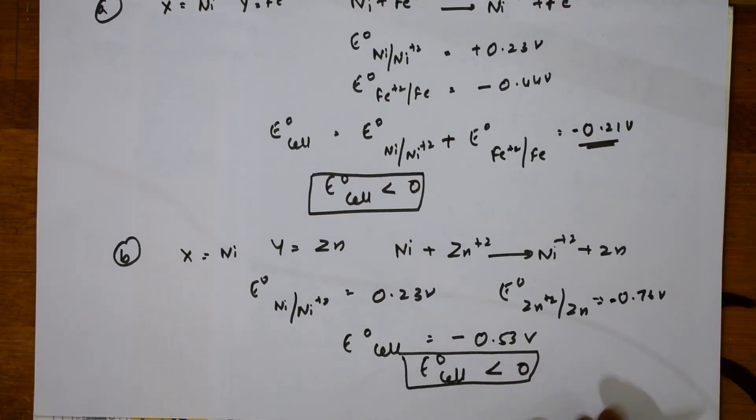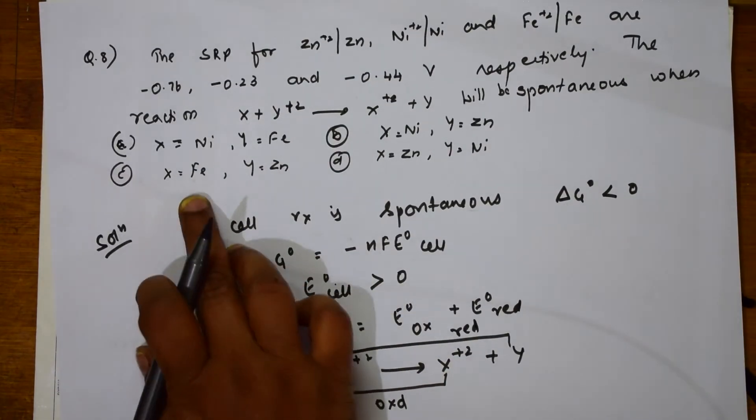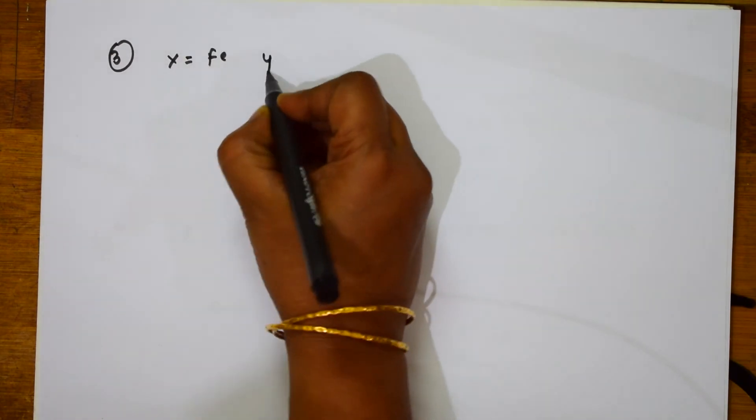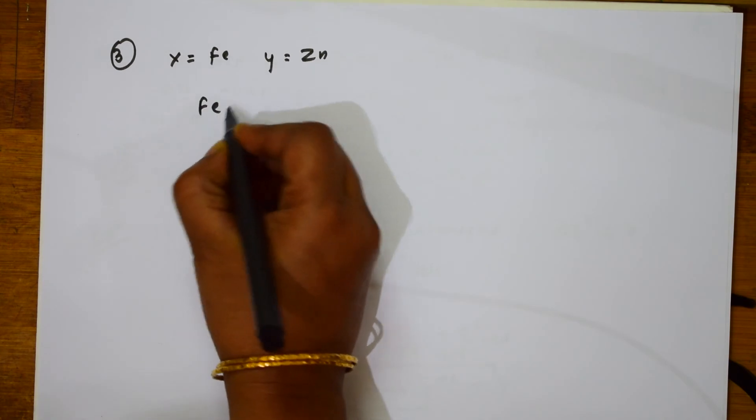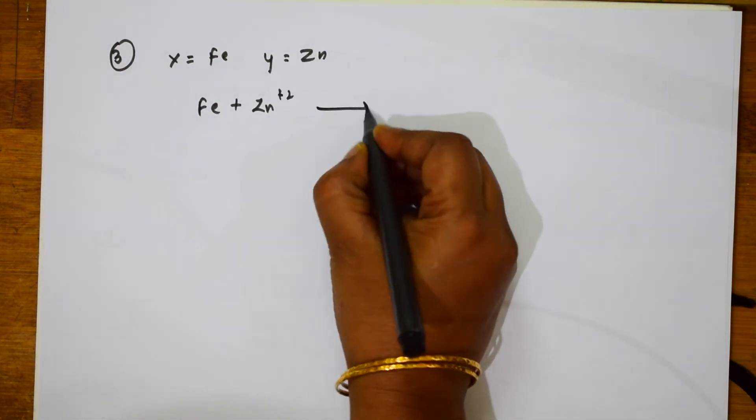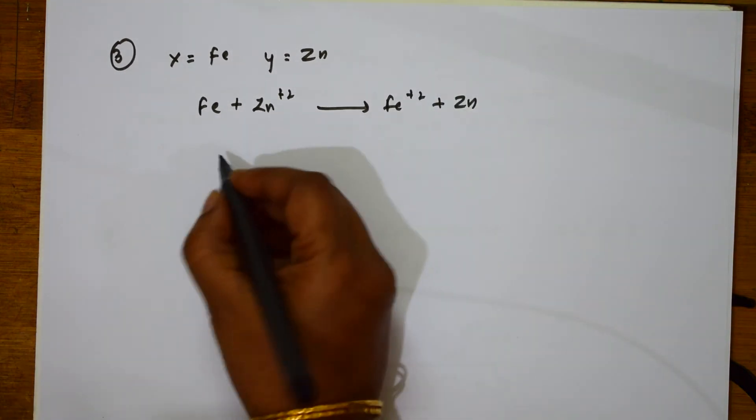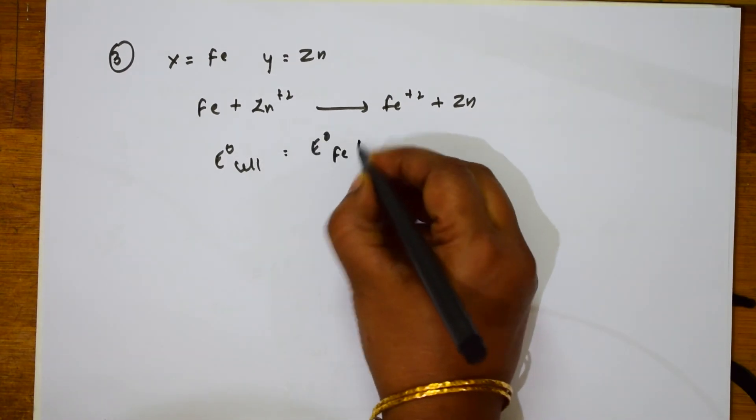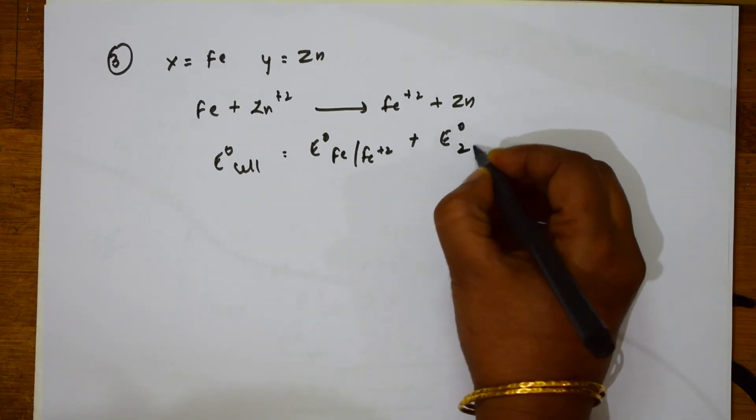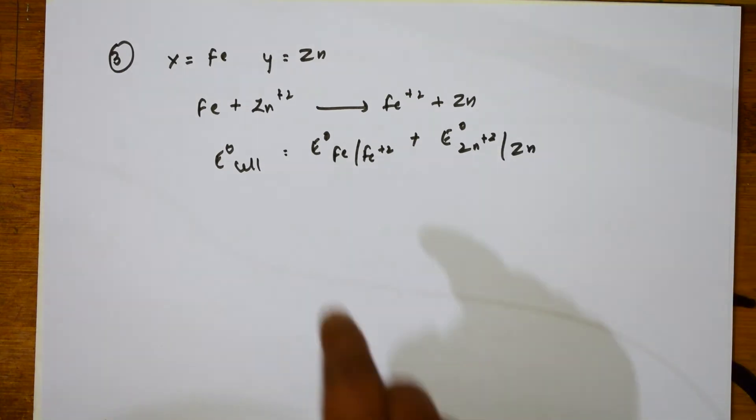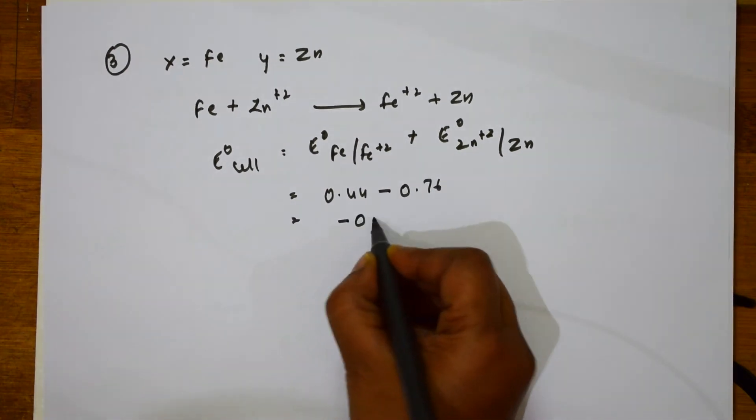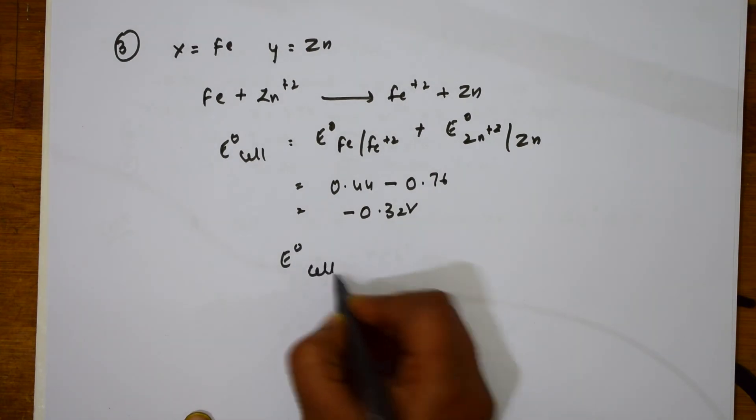Let me take the third case and solve. In the third case, what do they give me? They have given me third case. Here, Fe and Zn. Let me solve for that. In Fe and Zn, when I have to take third case, X = Fe, Y = Zn. Let us write the cell reaction. Fe + Zn²⁺ gives me Fe²⁺ + Zn. E naught cell is equal to E naught Fe/Fe²⁺ plus E naught Zn/Zn²⁺. If I have to substitute 0.44 minus of 0.76, I get an answer of minus 0.32 volts. E naught cell is less than 0.